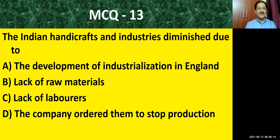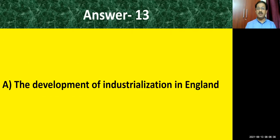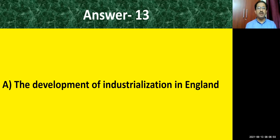Question number thirteen: the Indian handicrafts and industries diminished due to — options: the development of industrialization in England; lack of laborers; the company ordered them to stop production. The correct answer is: the development of industrialization in England. Because of that, they demanded only raw material, not the finished product. Cotton, textile, handicraft goods, and local products — their production stopped and people became unemployed.